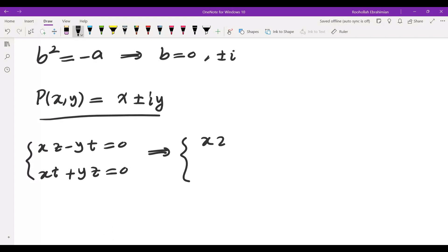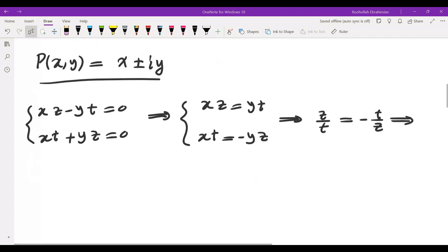Let's see what we get. We get XZ equals YT and we also get XT equals negative YZ. Dividing the two we get Z over T is equal to negative T over Z which means T squared is negative Z squared. So you can take T to be plus or minus IZ. I'm going to take T equals IZ.